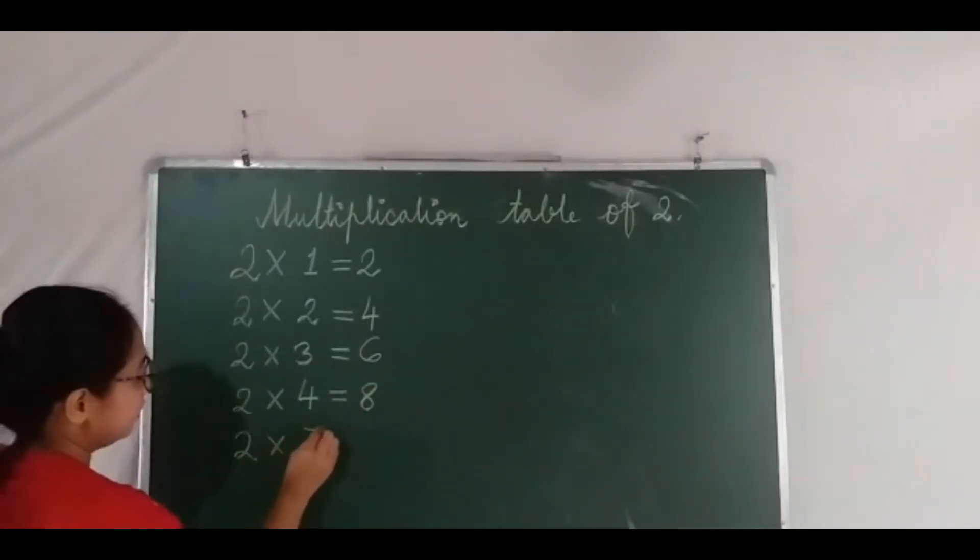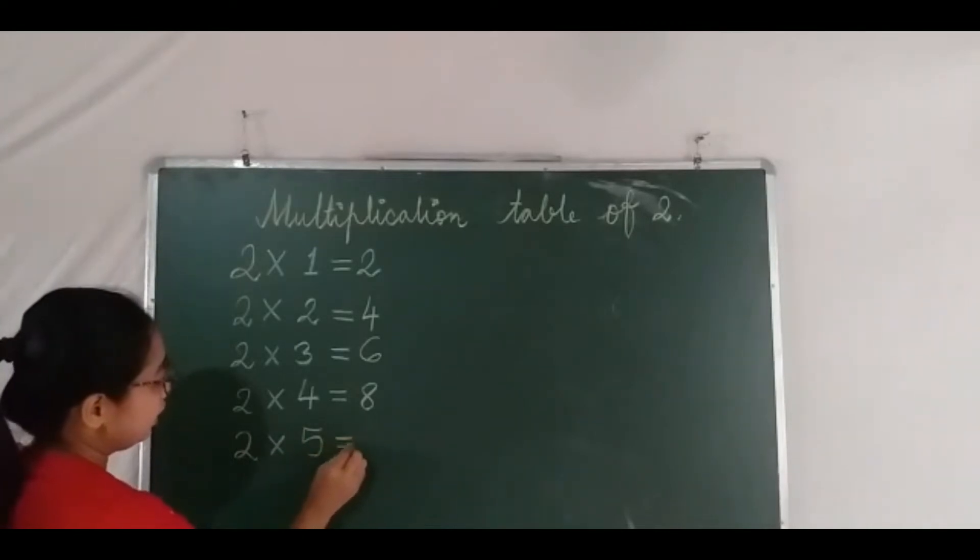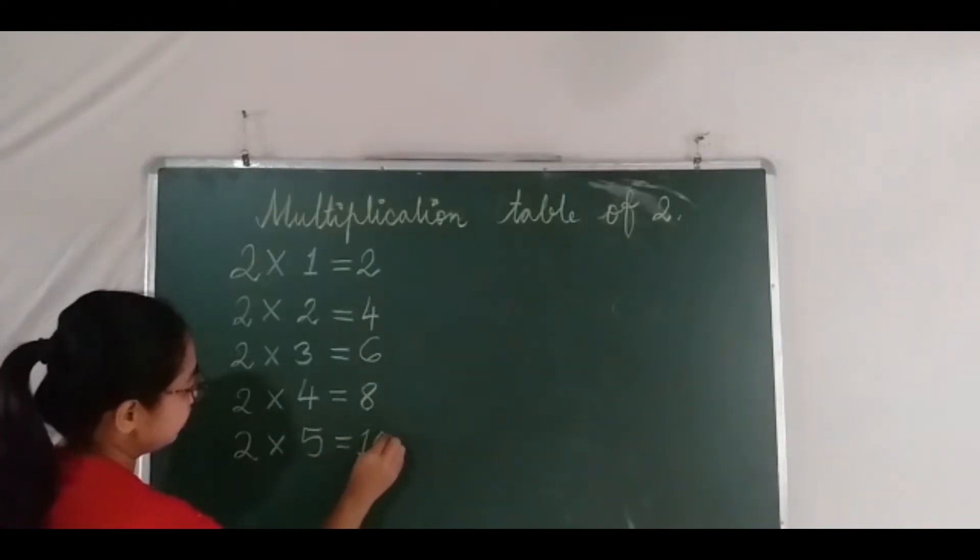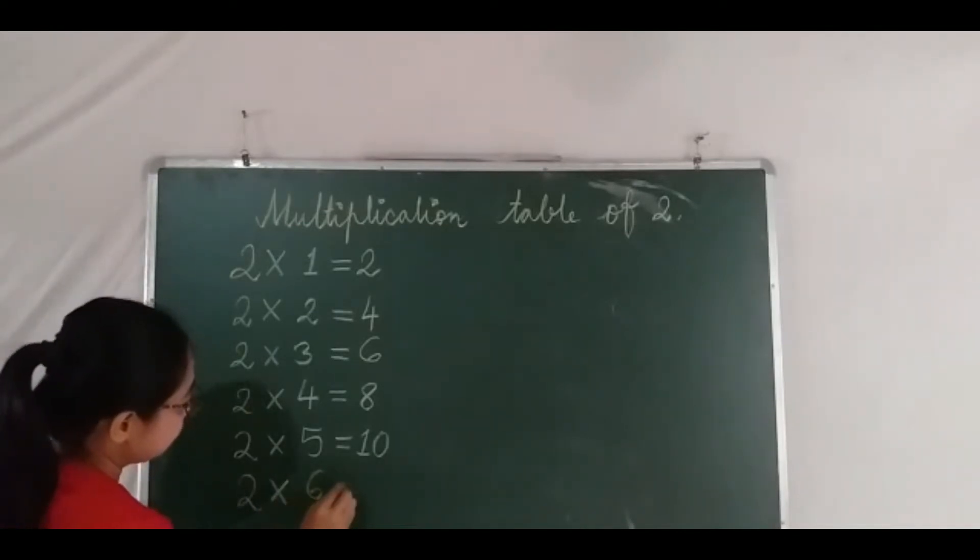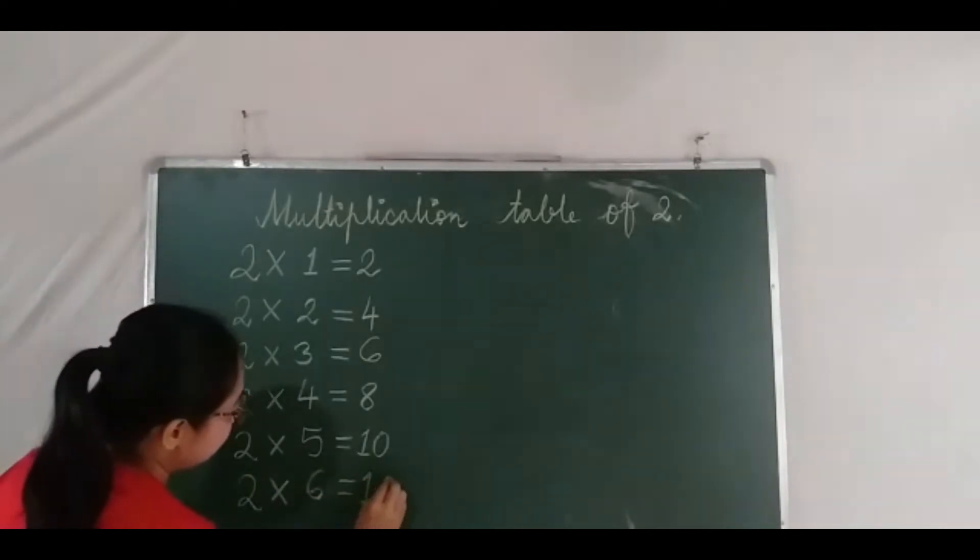Two fives are ten, two sixes are twelve.